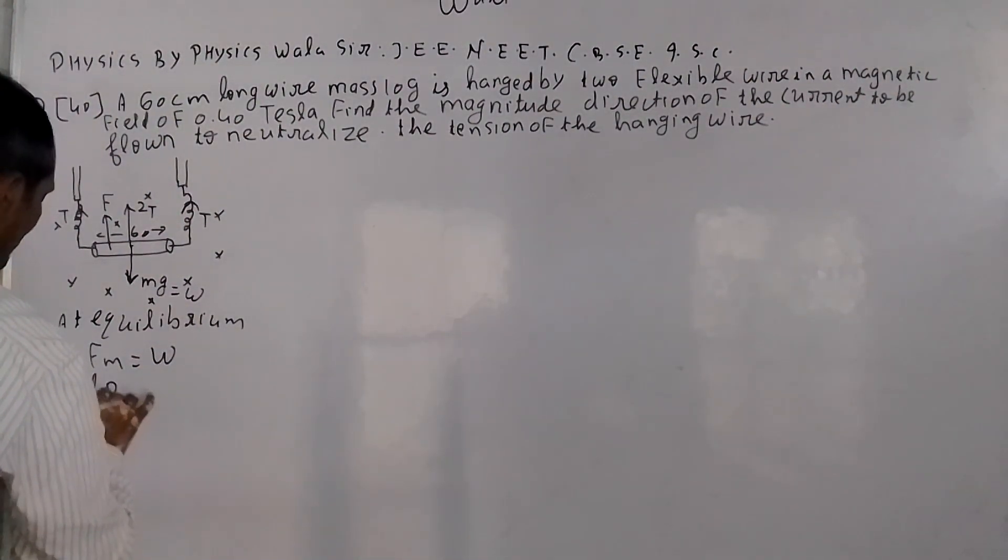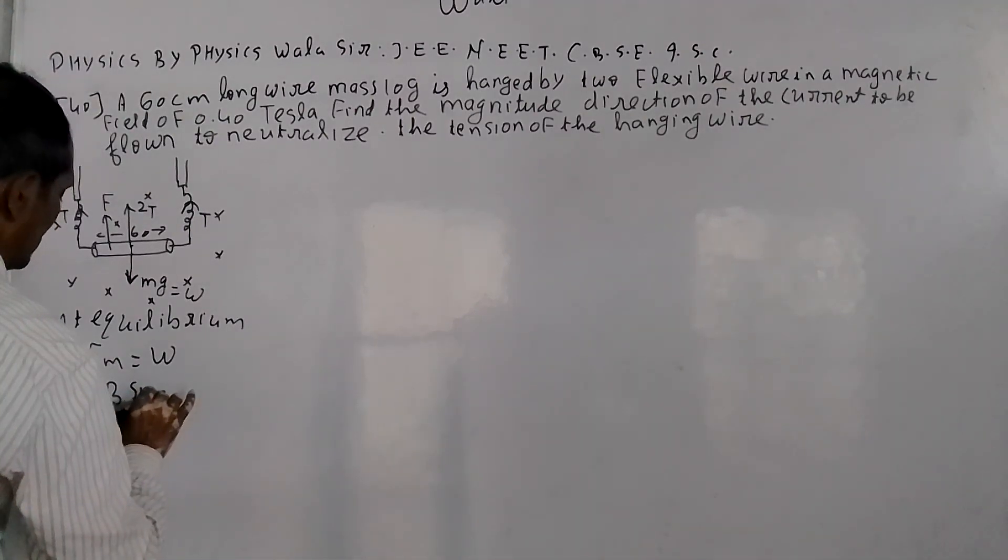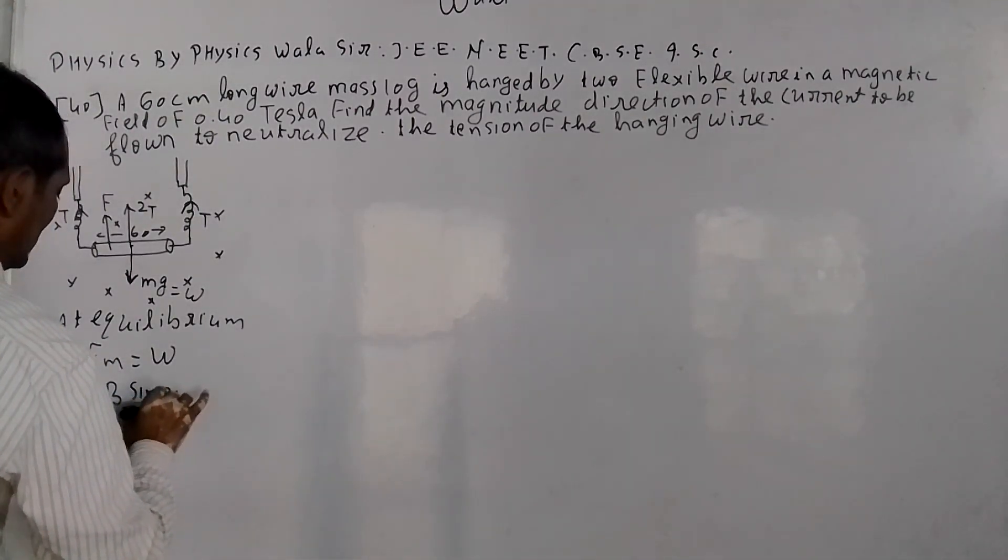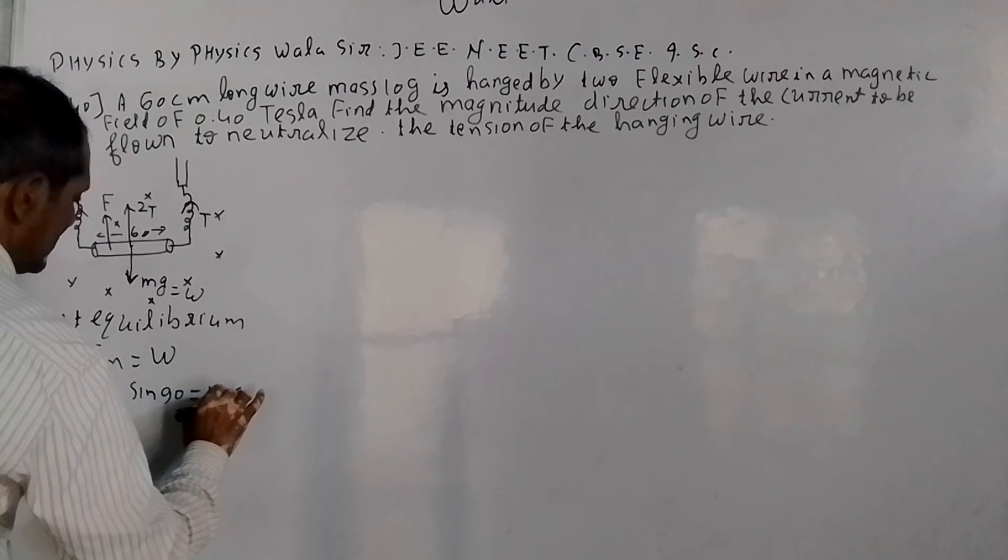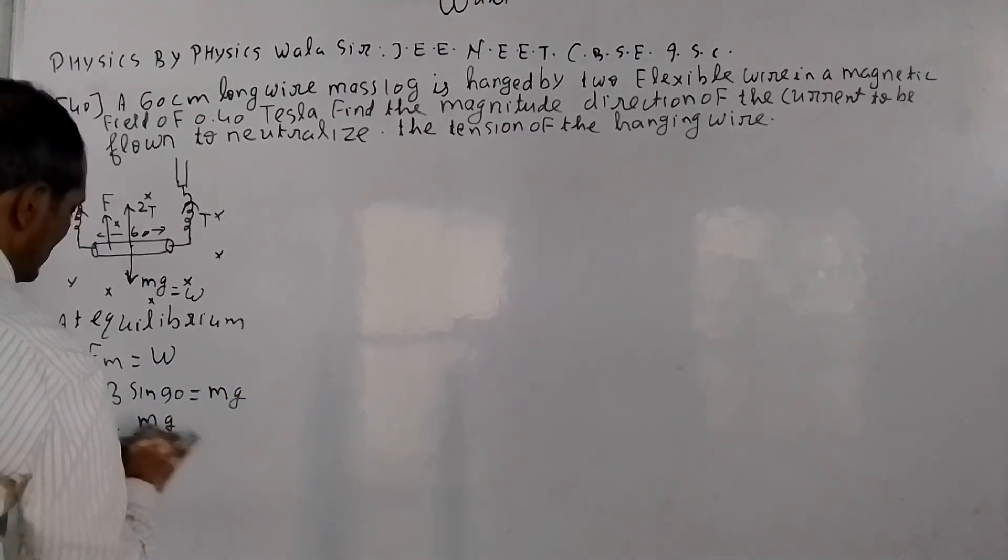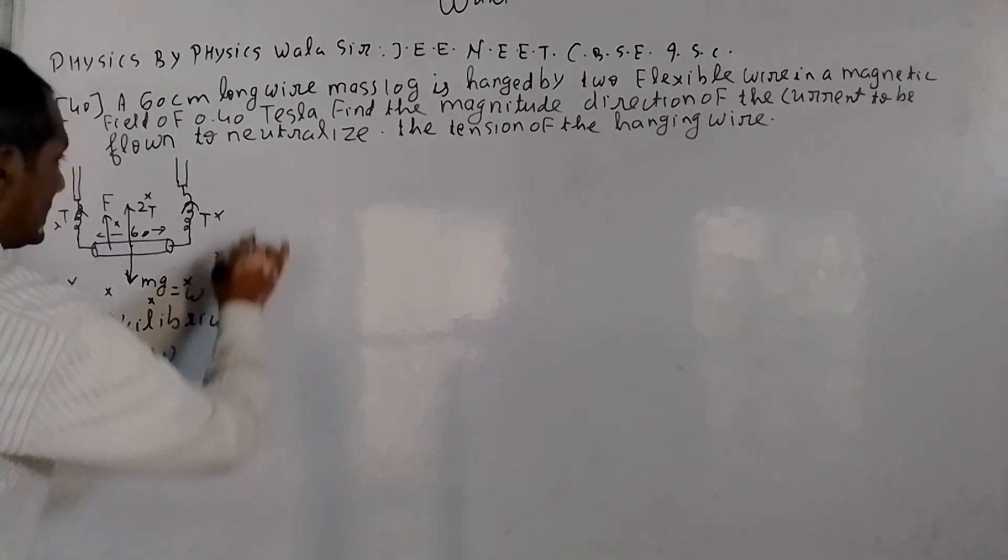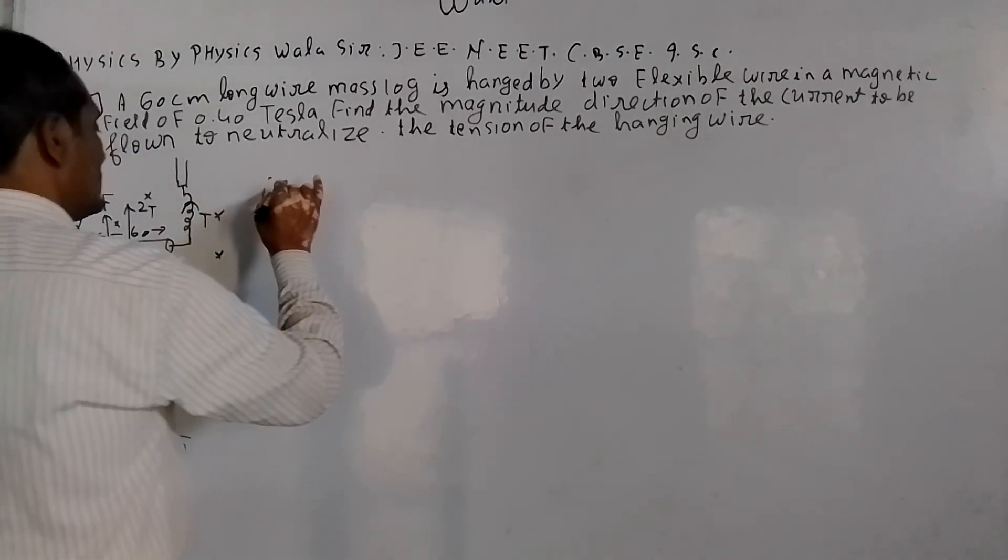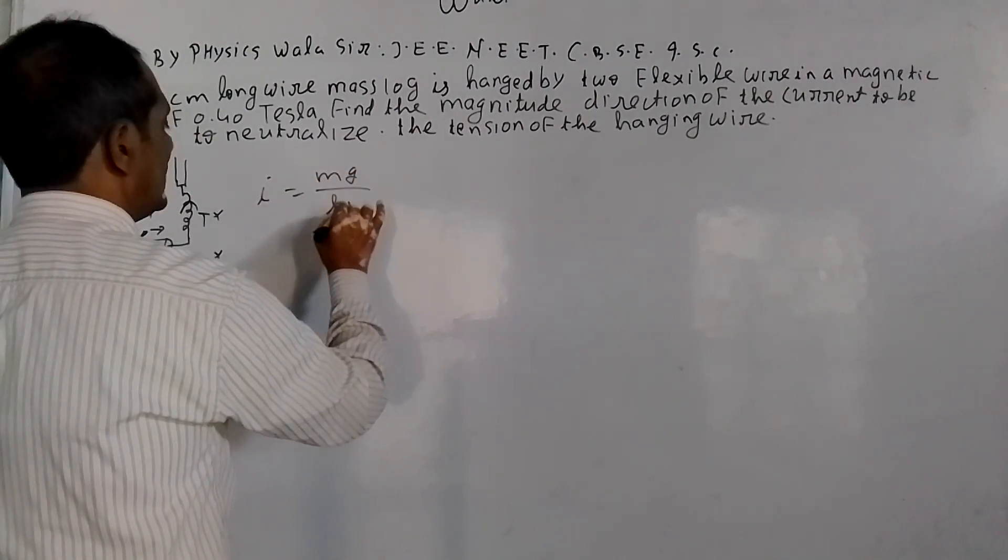The magnetic force is I L B sin theta, and the weight. So I do what I do - mg upon L times B is equal to I. I work together - mg upon I times L.